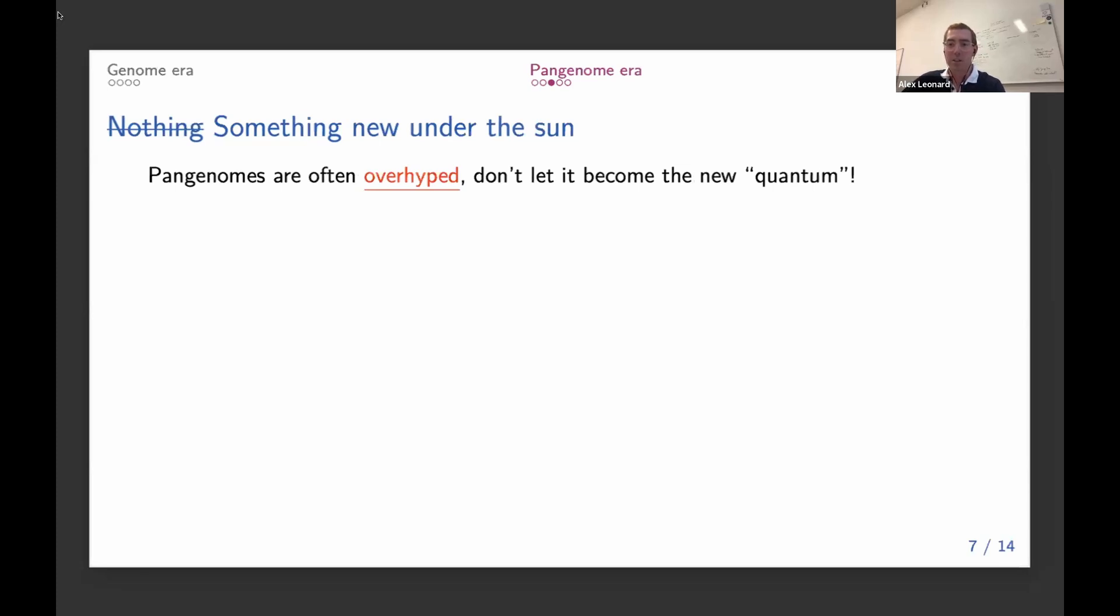It's worth remembering that pangenomes ultimately are just a collection of genome assemblies coming from sequencing data. And the end results for many pangenome analysis is just some type of genomic variation. So this is something that we've been doing for dozens of years. There's not fundamentally that much different when we work with pangenomes.